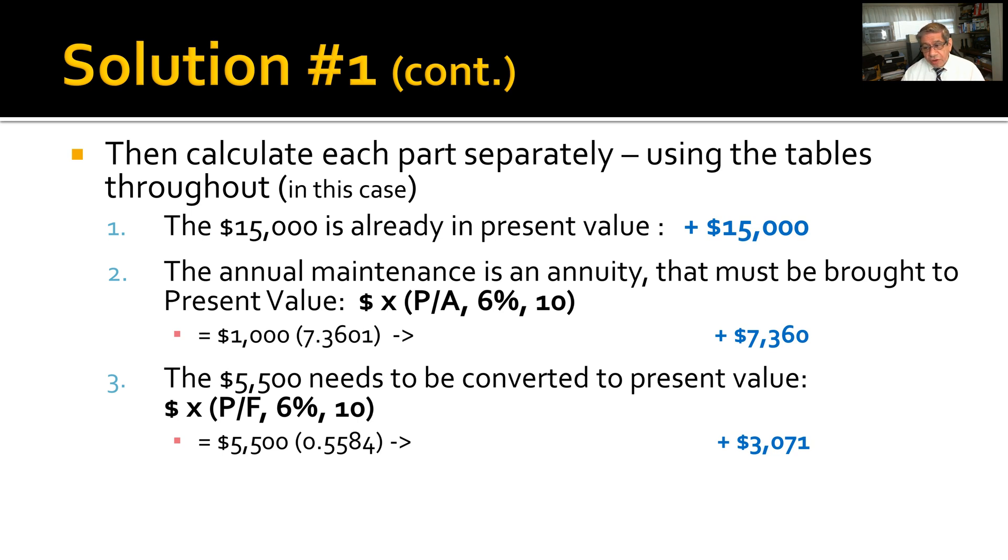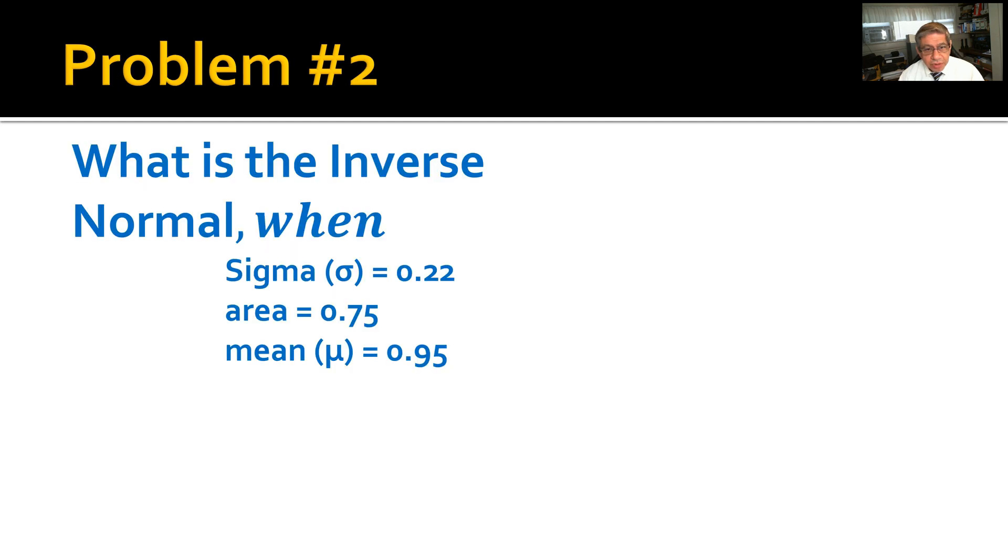The total present value of this entire problem comes out to be $25,431. Problem number two: What is the inverse normal when sigma is 0.22, area is 0.75, mean is 0.95? Using the calculator and the function Stat Distribution, pick inverse normal as the function and the answer comes out to 1.098. Pick the closest answer, which in this case is B.